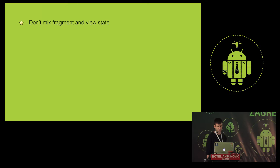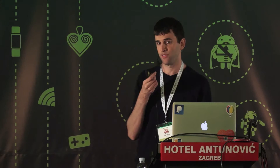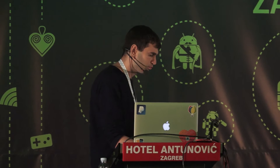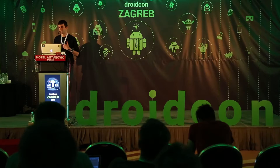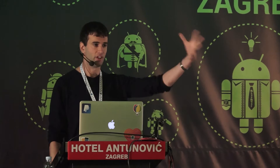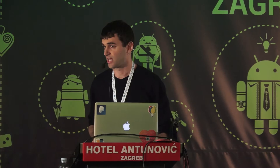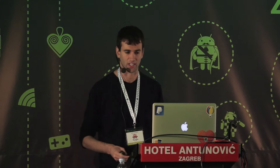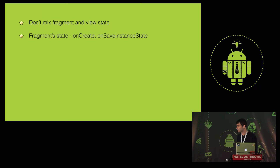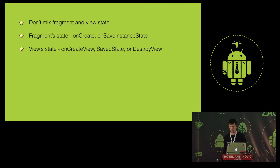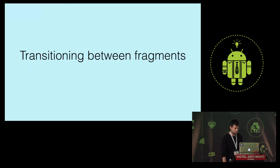Quick recap: don't mix fragment and view state. These are terms I made up, but the idea is to separate data like contact and amount (which are part of the transaction) from things like child view references, click listeners, and gesture detectors. Fragment state should be initialized and restored in onCreate, and persisted in onSaveInstanceState. View state goes in onCreateView, using the saved state pattern and onDestroyView.